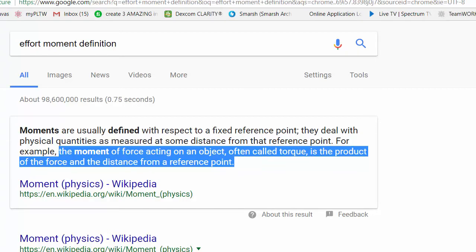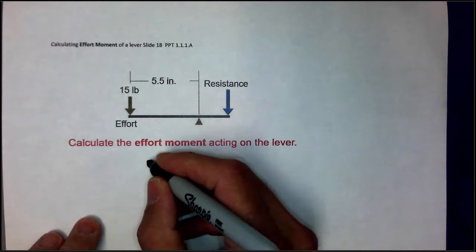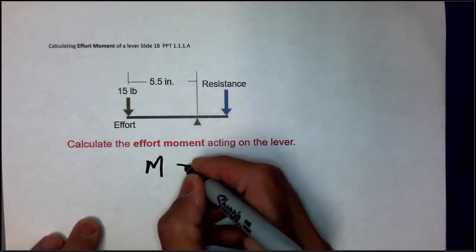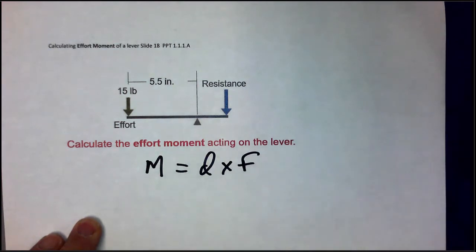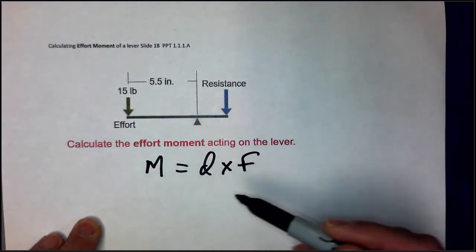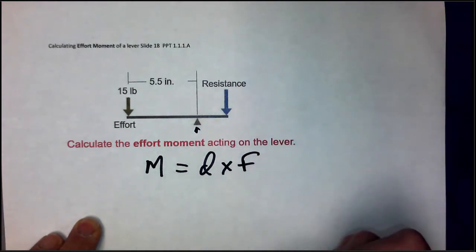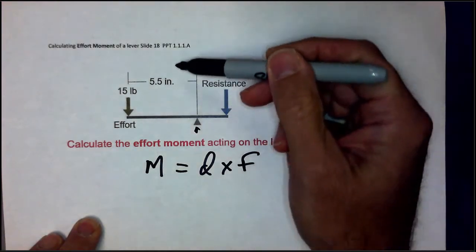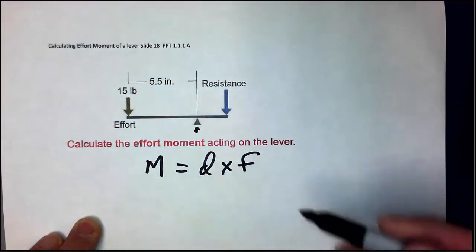So that makes our life real easy. If we know that the moment is equal to distance times the force, then to solve this equation all we need to do is have a distance and a force. Here's our fixed point, the fulcrum. We have a distance of 5.5 inches and we have a force of 15 pounds.